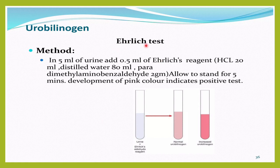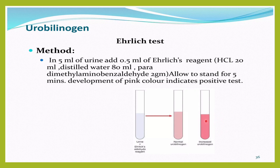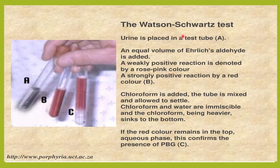The Ehrlich test is used to detect urobilinogen: 5 ml of urine is taken and 0.5 ml of Ehrlich reagent is added. When allowed to stand for five minutes, a pinkish color indicates a positive result due to increased urobilinogen. However, the Ehrlich test does not differentiate between urobilinogen and porphobilinogen.